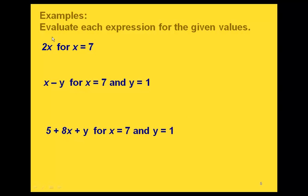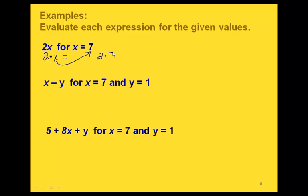Here's an example: the expression 2x, evaluated when x equals 7. Remember, 2x means we're multiplying 2 and x, though the multiplication symbol isn't written. We can write it as 2 times x. Replacing x with 7 gives 2 times 7, and 2 times 7 is 14.